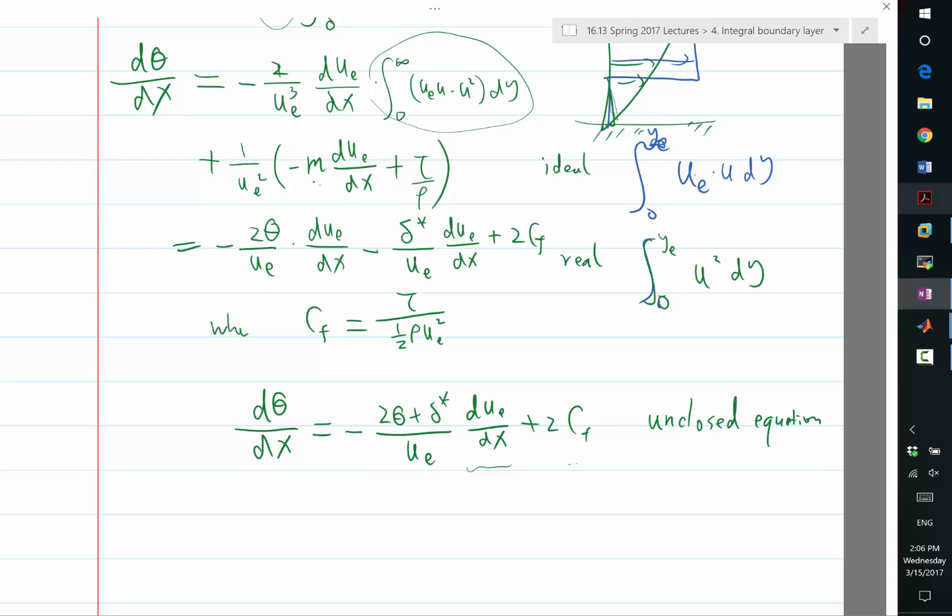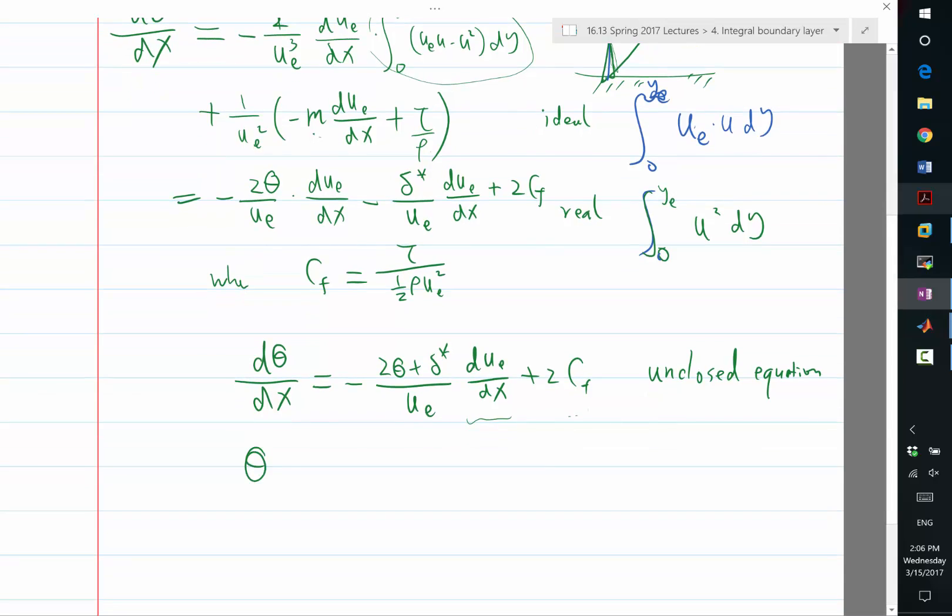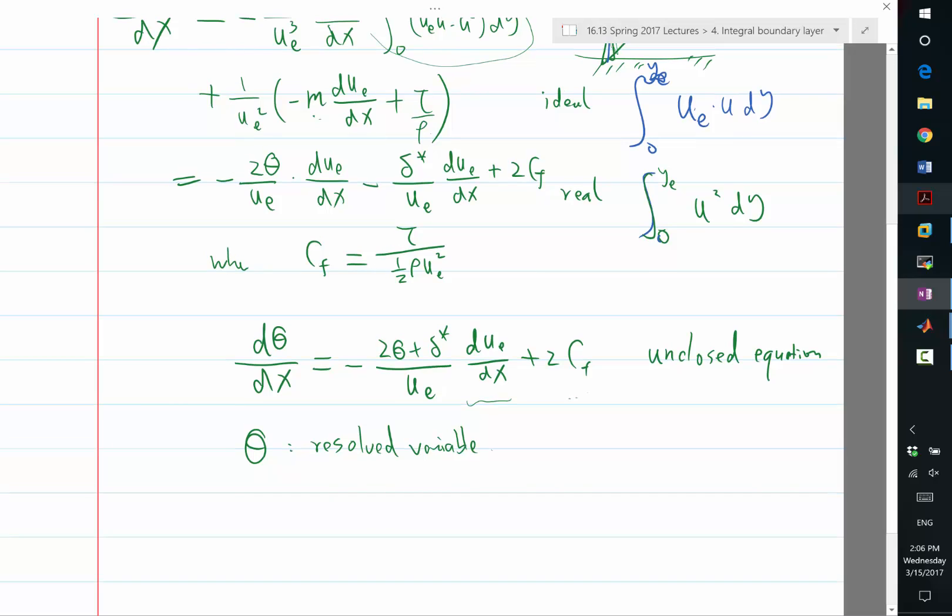By somehow modeling the additional variables as functions of the resolved variables. So, here, θ is the resolved variable. Okay. So, if θ, combined with due/dx and cf, sorry, combined with due/dx can determine the other terms.